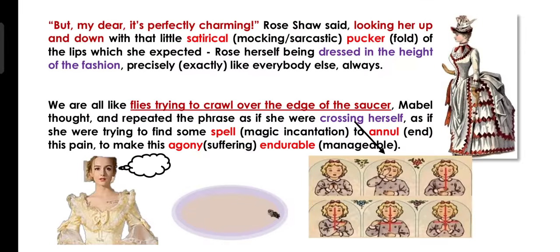Until this point in the party, Rose Shaw — who was a fashion icon — looked at Mabel and said to her lips, 'My dear, your dress is so charming.' But of course, Mabel took her appreciation as a taunt.